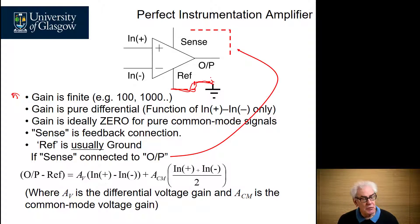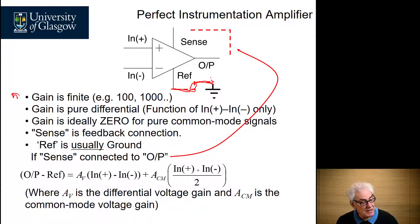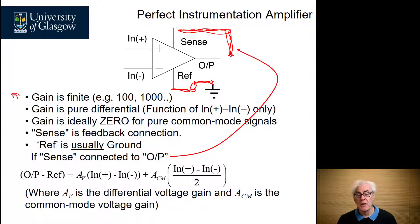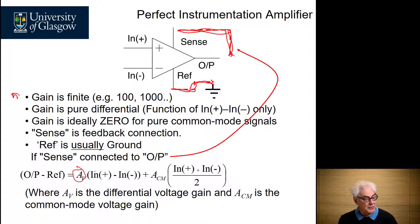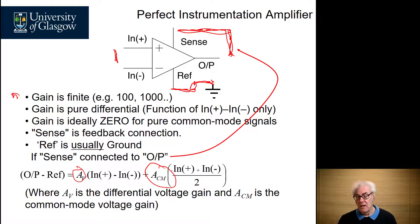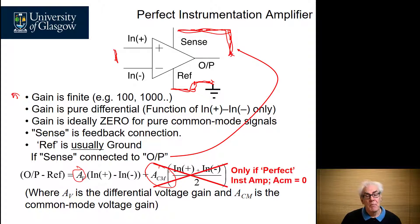The reference signal is usually referred to ground, although it does not need to be — you can refer it to other points in the circuit as well, perhaps a bias rail. And the sense signal is usually connected to the output in the conventional feedback fashion. The output, or the difference between the output and the reference, is a differential voltage gain of the difference of the voltage between N+ and N−, and also a component due to the common mode voltage gain. But if we have a perfect instrumentation amplifier, ideally the common mode voltage gain would be zero.